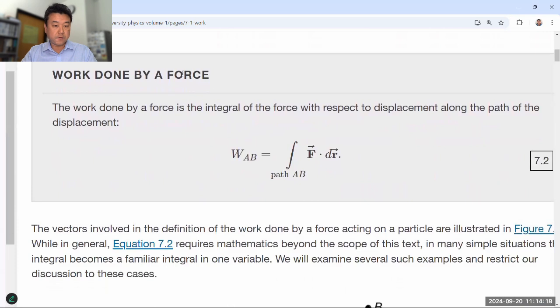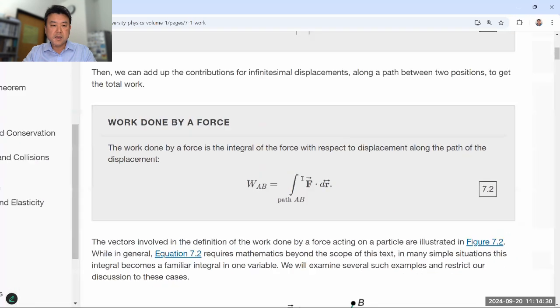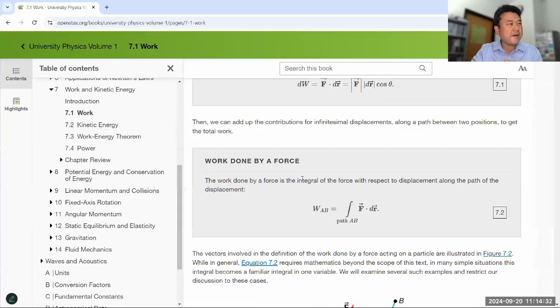So the basic definition of work done over some non-infinitesimal distance of displacement would be the infinitesimal amount of work done integrated over the path. And I don't think I have that many examples where the path is anything other than a straight path. But it's something to keep in mind that as we are in a calculus-based physics class that the tools we introduce can be used to deal with the curved paths, any kind of general arbitrary path.